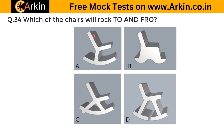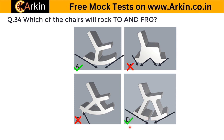Which of the chairs will rock to and fro? In option A, when a person is sitting and pushes with a little force on the back side, the chair will move back, and an equal and opposite force will push the chair to the front. Similarly when it hits the front, an equal and opposite force brings it back — so it will move to and fro, meaning A will be correct. Here we are seeing two curvatures, so the force will be acting in different directions — this chair will not rock. Here again there is a hindrance because of which it will not rock.